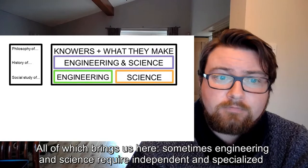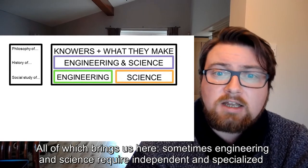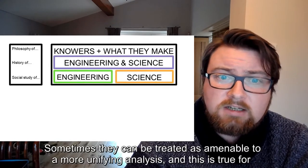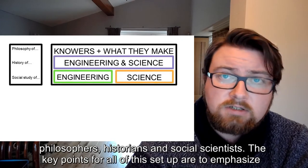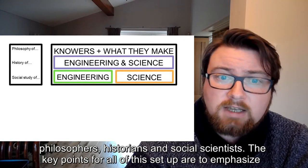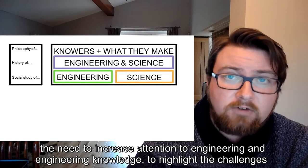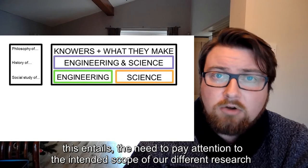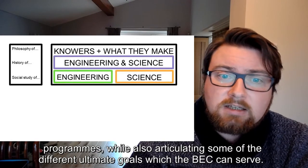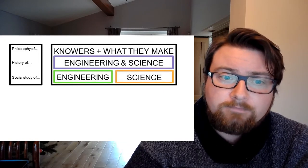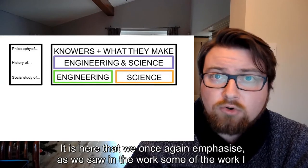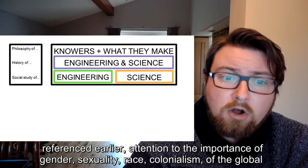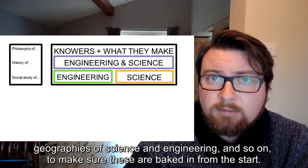All of which brings us here. Sometimes engineering and science require independent and specialised parallel analysis — and this is true for philosophers, historians, and social scientists. Sometimes they can be treated as amenable to a more unifying analysis — and this is also true for all three. The key points for all of this setup are to emphasise the need to increase attention to engineering and engineering knowledge, to highlight the challenges this entails, and to articulate some of the different ultimate goals which the BEC can serve. We once again emphasise attention to the importance of gender, sexuality, race, colonialism, of the global geographies of science and engineering, and so on, to make sure these are baked in from the start.